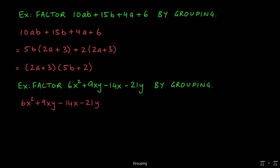Let's do the same with this next problem: 6x² + 9xy - 14x - 21y. We're solving by grouping again, so we group the first two terms (6x² + 9xy) and the last two terms (-14x - 21y) together. For the first two terms, the GCF is 3x. After dividing by the GCF, we get (2x + 3y): 6x² ÷ 3x = 2x, and 9xy ÷ 3x = 3y.